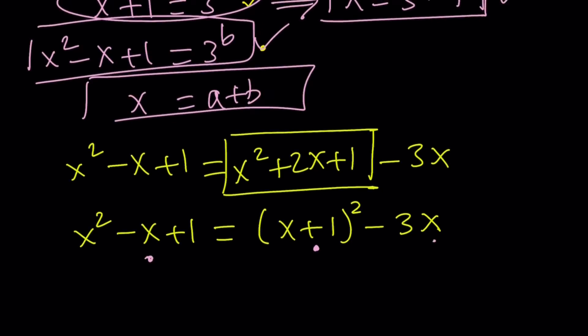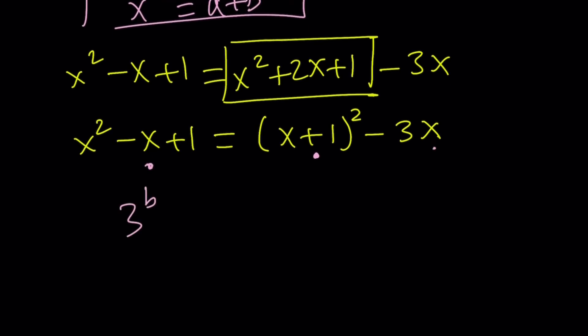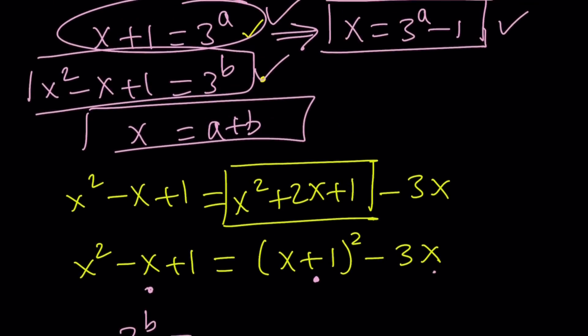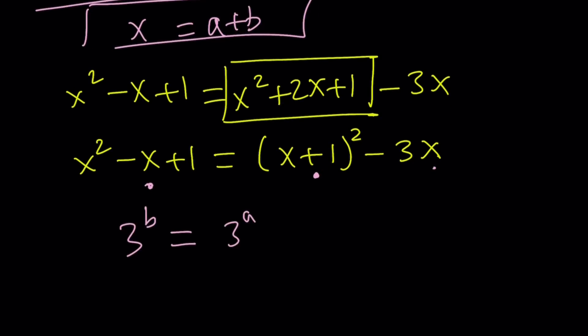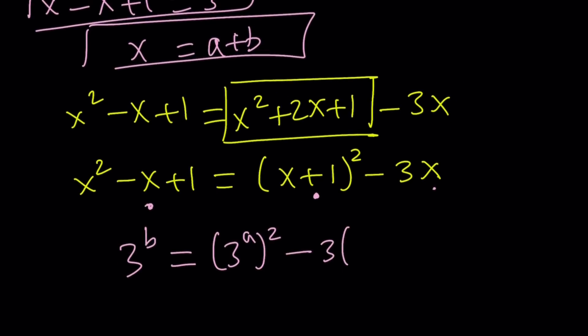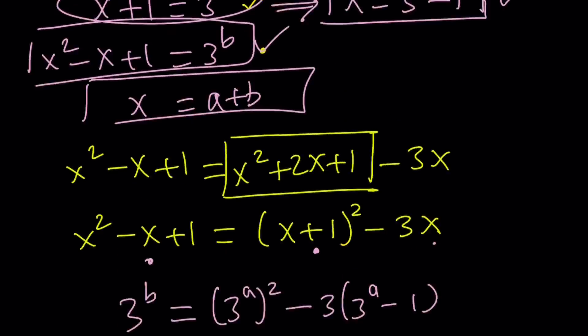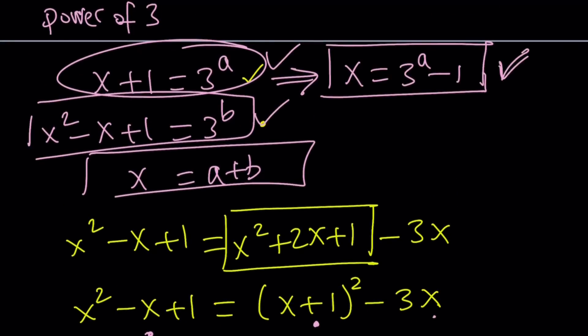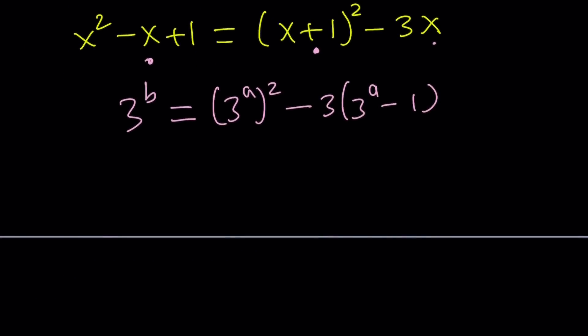Let's replace first this one. 3 to the power of b equals x plus 1 squared is 3 to the power of a squared minus 3x. And x is 3 times, I mean, 3 to the power of a minus 1. Notice that we got x in terms of a as well. So, what? You've done all the work for nothing? No. Well, this looks complicated, right? Let's go ahead and expand it. Don't worry about the complications.